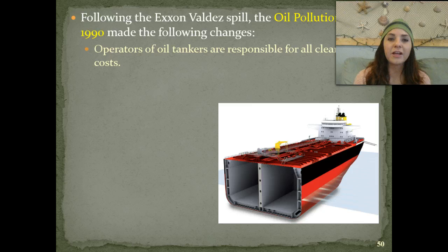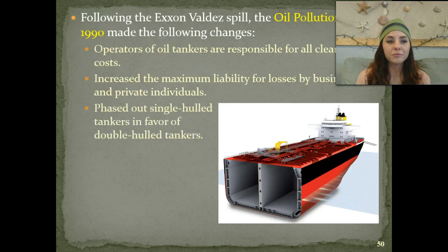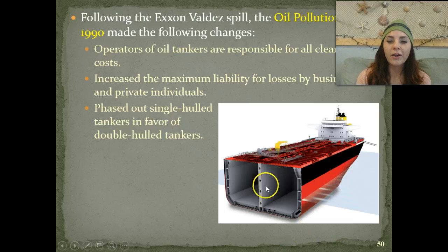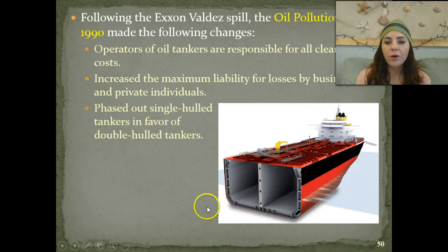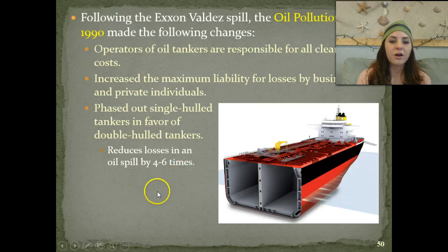Because of that, we came up with the Oil Pollution Act of 1990. Operators of oil tankers were made responsible for all cleanup costs, and the maximum liability for losses by businesses and private individuals was increased. Single-hulled tankers were phased out in favor of double-hulled tankers—if one hull has damage, only that one will have a spill. The double hull reduces losses in an oil spill by about four to six times.